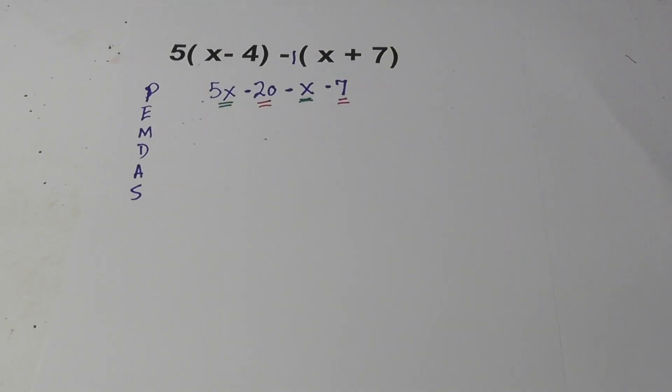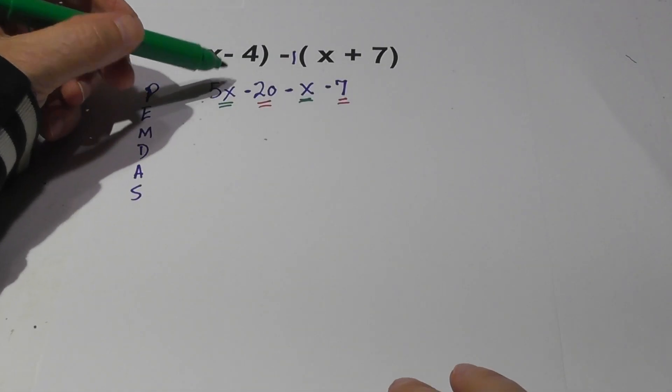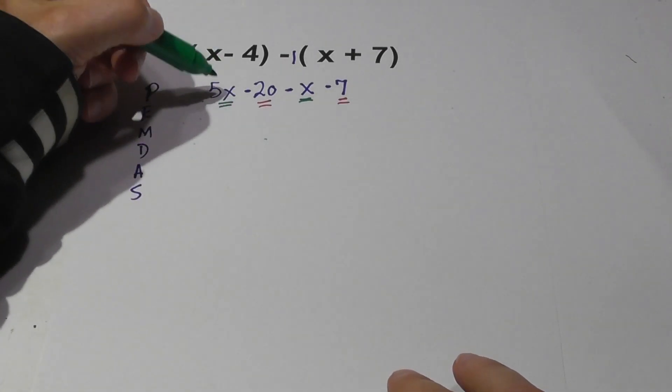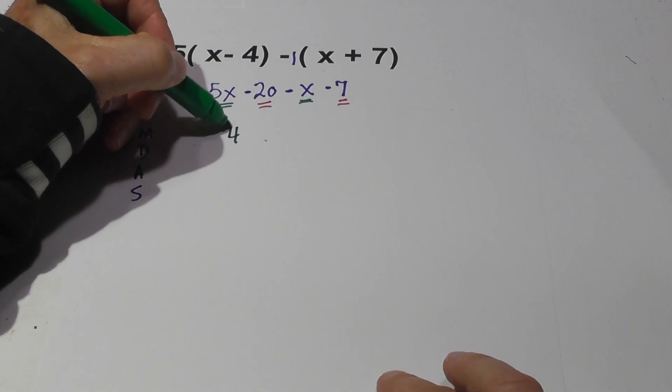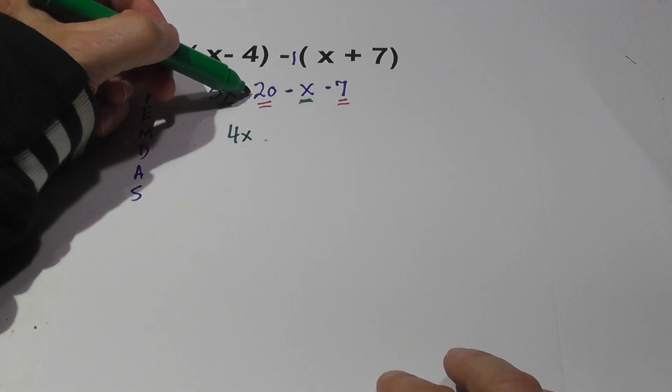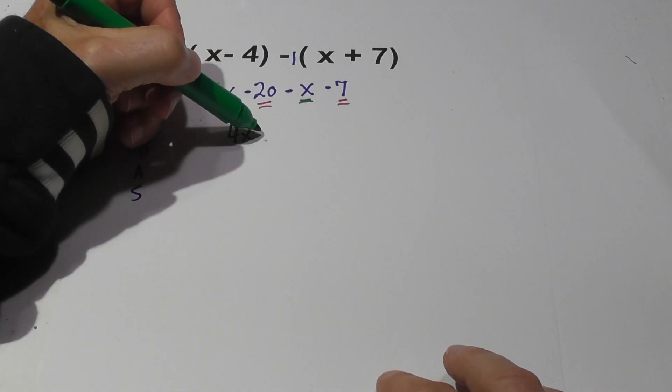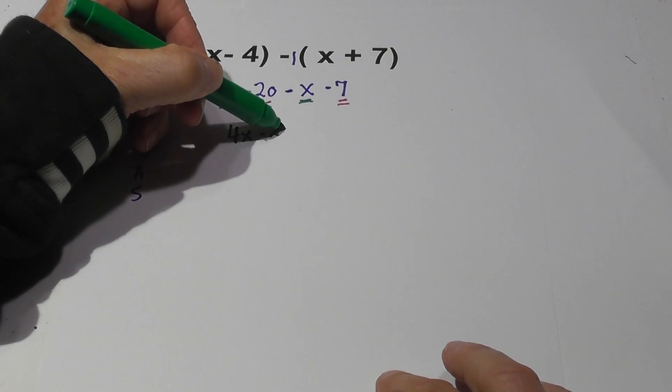I'm going to first, remember we're going to work, well it doesn't matter, but in alphabetical order. Let's go ahead and use the exponents first. This is like x to the first power. So 5x minus x is 4x, negative 20, negative 7 is negative 27.